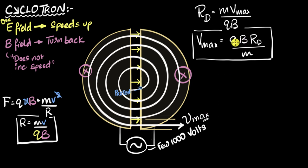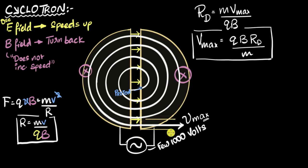What does the maximum speed depend on? I won't worry about the charge and the mass, since they are constants for a given particle. I see that it depends upon the radius of the D — meaning if I increase the radius of the D, making my cyclotron bigger, the maximum speed increases. That makes sense because with a larger cyclotron, I can spiral the particle to higher speeds before shooting it out.